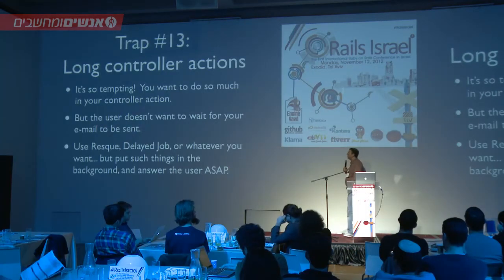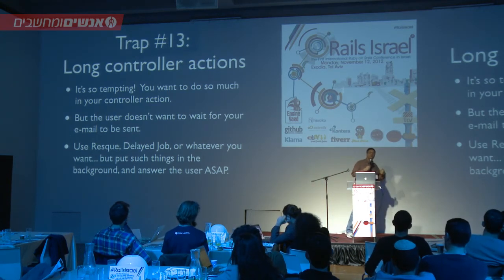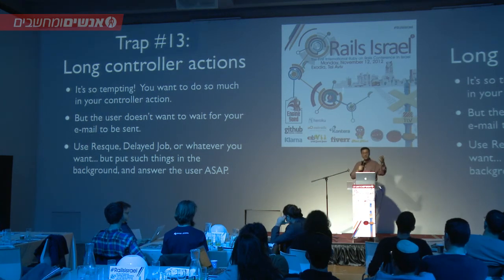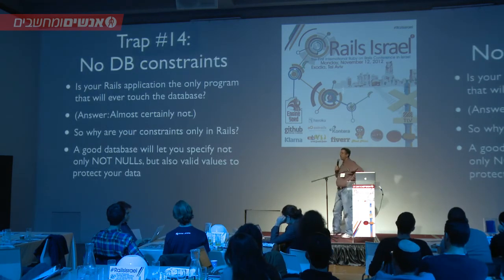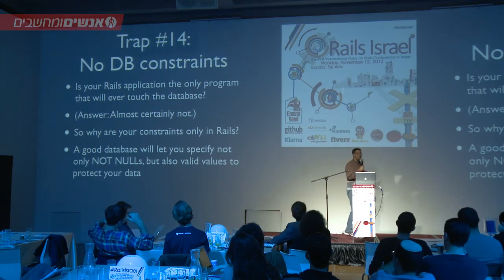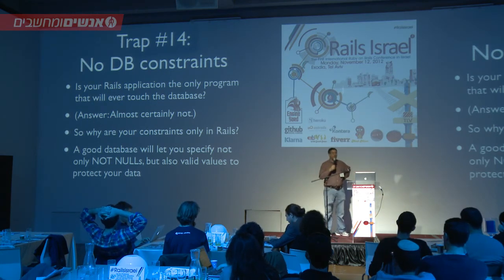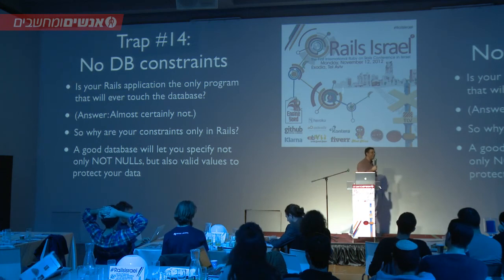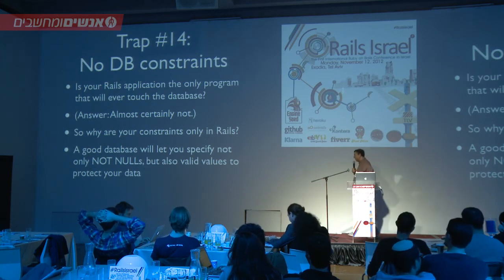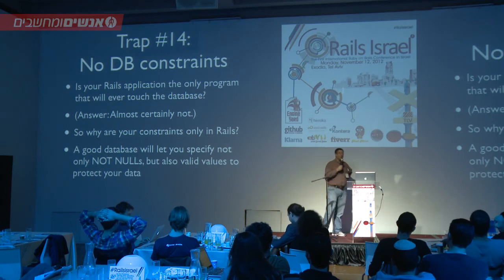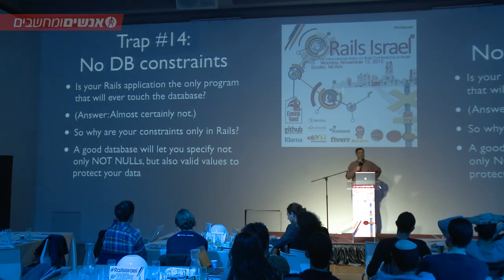Long controller actions — when the controller is just taking too long because you're trying to do too much inside of it. You should use Rescue, Delayed Job, and other tools to put things in the background. Don't do too much in your controllers. Another thing I see people do is not putting constraints on their database — they say 'I'm just going to access my database through my Rails app, so I don't have to worry about foreign keys, not nulls, or constraint checks.' Your database is probably your crown jewels. The odds are that at some point someone is going to access your database not through your Rails app, and then all those validations you wrote will be ignored 100%. Try to have some checking on your database as well.